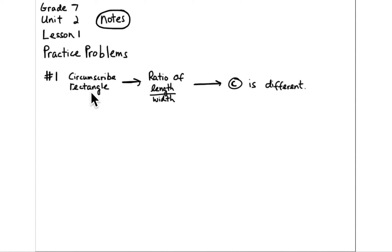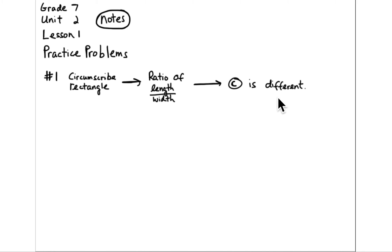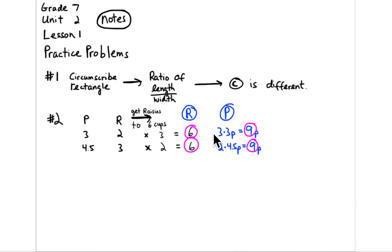For the practice problem number 1, you have ovals. Circumscribe a rectangle around each oval and look at the ratios of length to width, just as in Activity 3. You'll find that C is the different one. You can see it visually, but you also need to show it mathematically.